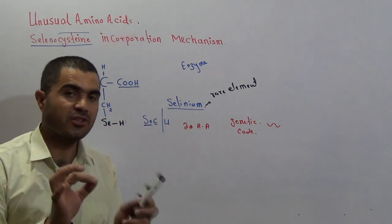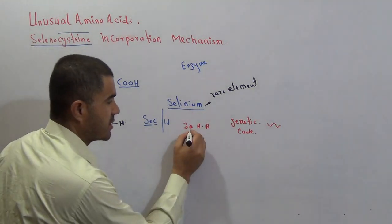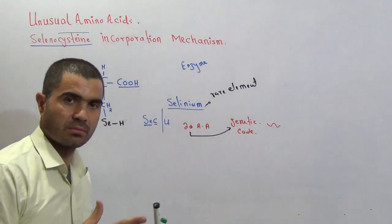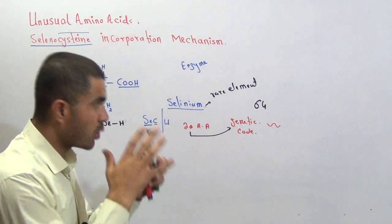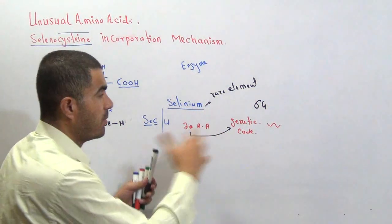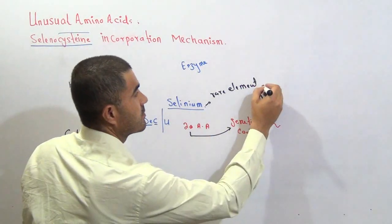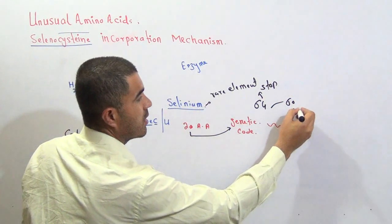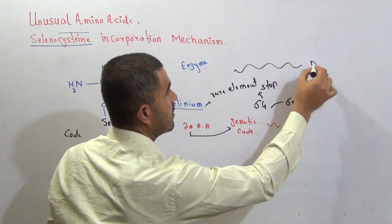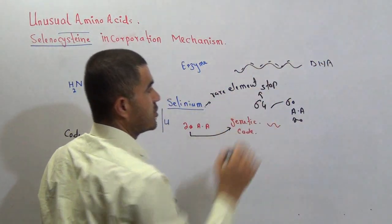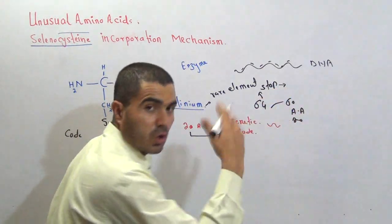The special thing about this amino acid is its genetic code. We know that for every one of the 20 amino acids there is at least one, two, or three genetic codes. There are a total of 64 genetic codes for these 20 amino acids. Among these 64, four codes are for the stop signal, and the remaining 60 are for the 20 amino acids. These 64 genetic codes are present on the DNA.